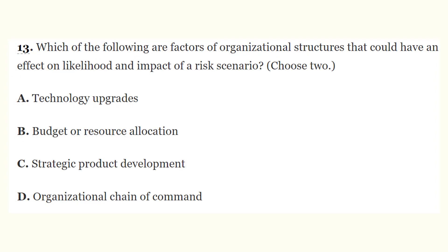Question 13: Which of the following are factors of organizational structures that could have an effect on likelihood and impact of a risk scenario — choose two? The correct answers are budget or resource allocation and organizational chain of command. Both chain of command and resource allocation are factors of organizational structure that could affect risk scenario likelihood and impact.